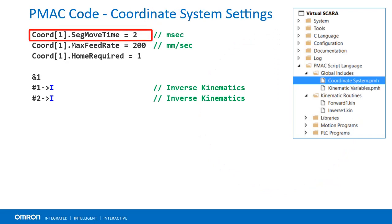For kinematics to be applied to the whole move, segmentation must be enabled by setting seg move time to a few milliseconds, typically an integer number of servo cycles. While the motor speed limit will still be in effect, the coordinate speed limit will be required to limit tooltip speed.